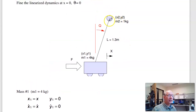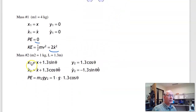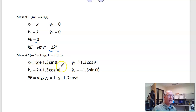For the second mass — the ball — its x-coordinate is x plus 1.3 sin θ, and its y-coordinate is 1.3 cos θ. Taking the full derivative gives x-dot plus 1.3 cos θ · θ-dot for the x velocity, and minus 1.3 sin θ · θ-dot for the y velocity.